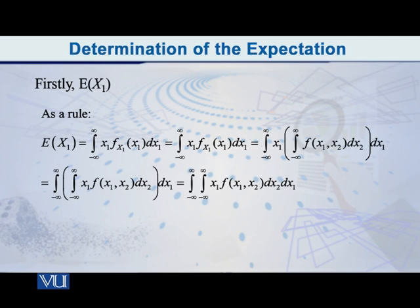E(X1) is equal to the integral from minus infinity to infinity of x1 into f of the random variable x1 at the point x1 with respect to x1. In this, the marginal density that is inserted,